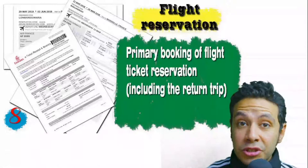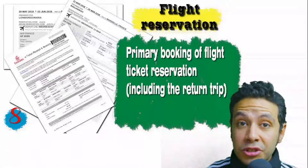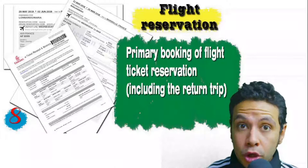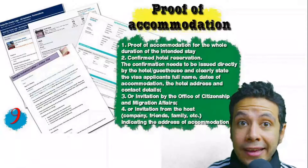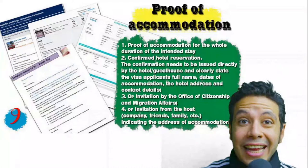You should also provide a flight reservation — an initial booking is usually acceptable, but in some cases a confirmed booking is required. Remember that the flight reservation must include a return ticket. You will also need proof of accommodation, which could be a confirmed hotel or hostel reservation, or an invitation from a host or organization in the country. For hotels, an initial booking is generally acceptable.